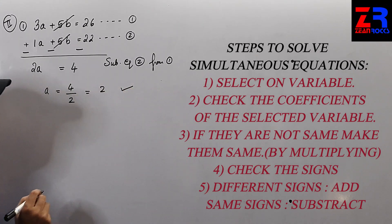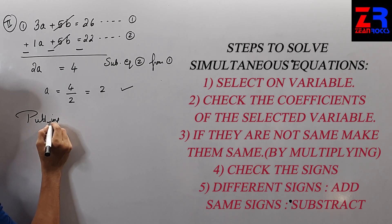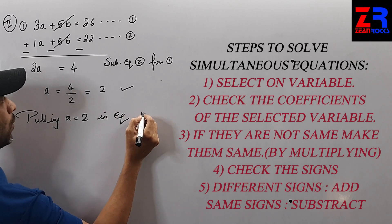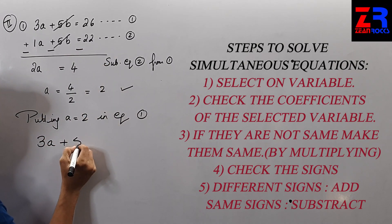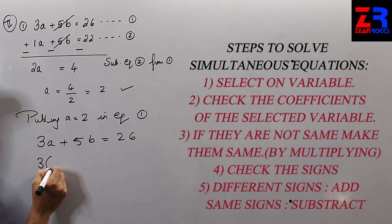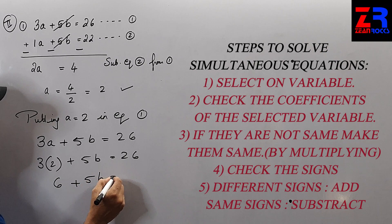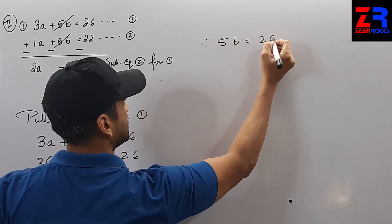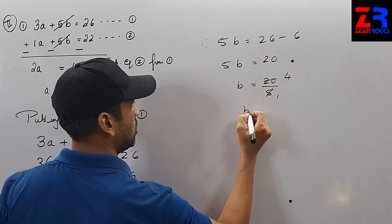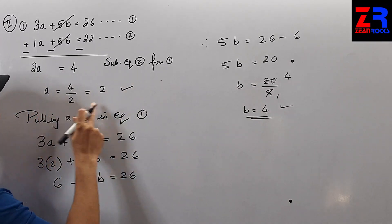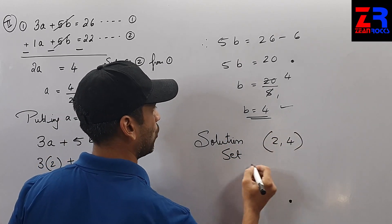I have got the value of a, but this is not the final answer because I need to find both variables. Putting the value of a in equation 1: 3(2) + 5b = 26, so 6 + 5b = 26, therefore 5b = 20, and b = 4. I have got a and b, so the solution set is (2, 4).